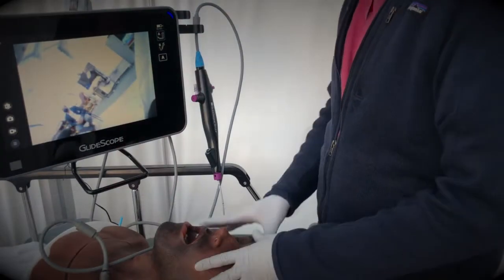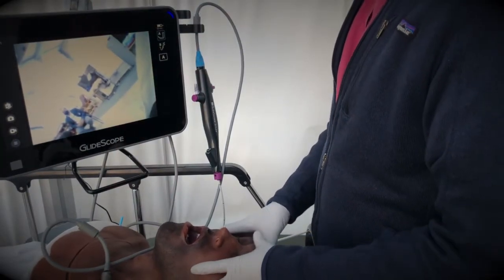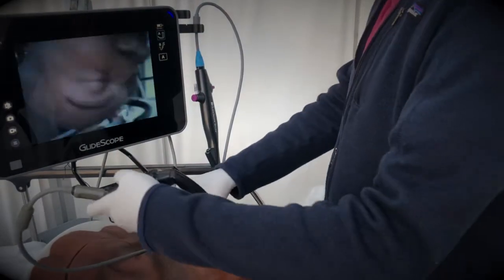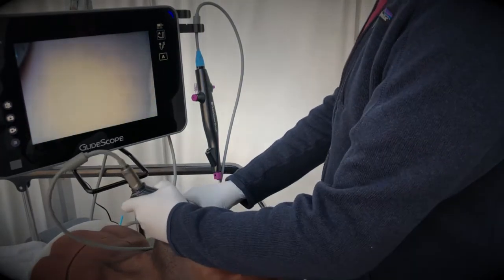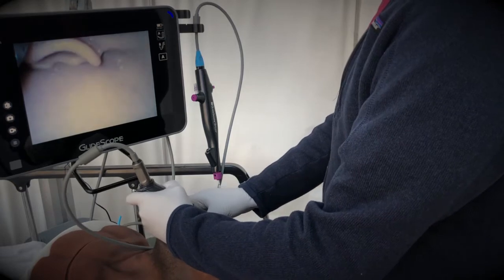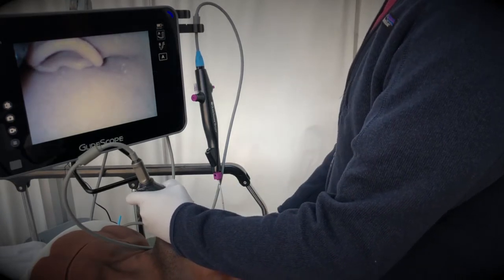Let's get started by dropping the bed all the way down to optimize our working conditions. Insert your standard geometry video laryngoscope blade and as you can see here the view is suboptimal, we only see the epiglottis.